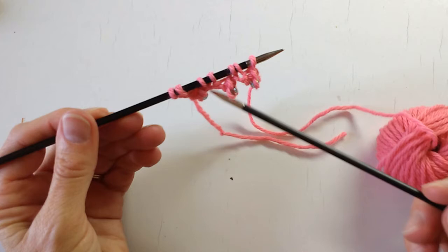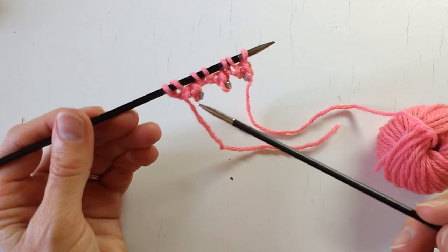And in between, where the groups of two are, is where the beaded picot is. And you can see the picot edge dangling down there with the bead at the very tip of it. So that is our beaded picot cast on.